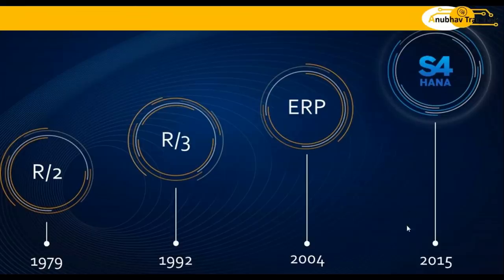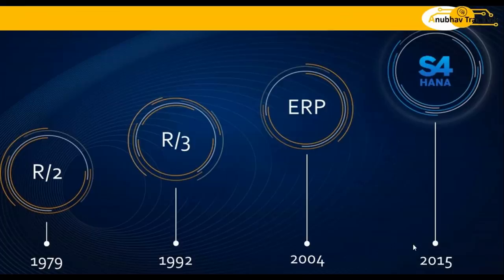The most recent evolution in the ERP space was SAP S4 HANA. S stands for simplified, 4 stands for fourth-generation business suite. This is the new product penetrating the market fastest at this point in time, and many of you are already seeing that change in your company — either planning to go on S4 or already on S4.